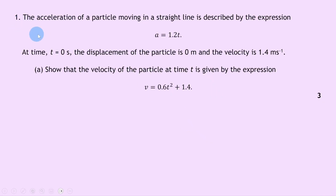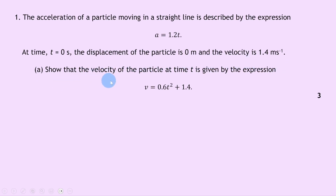For question 1, it says the acceleration of a particle moving in a straight line is described by the expression a equals 1.2t. At time t equals 0 seconds, the displacement of the particle is 0 metres and the velocity is 1.4 metres per second. Part a says to show that the velocity at time t is given by v equals 0.6t squared plus 1.4, and there are three marks available.